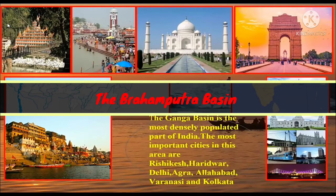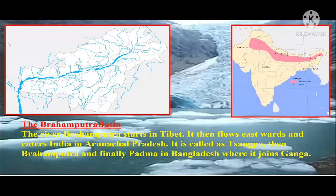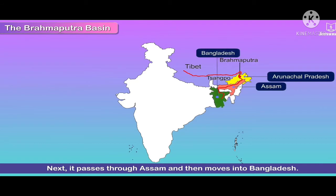Now comes the Brahmaputra basin. The river Brahmaputra starts in Tibet, where it is called Sangpo. It then flows eastwards and enters India in Arunachal Pradesh, where it is called Dihang. Then finally it becomes Padma in Bangladesh, where it joins the river Ganga and falls into the Bay of Bengal.